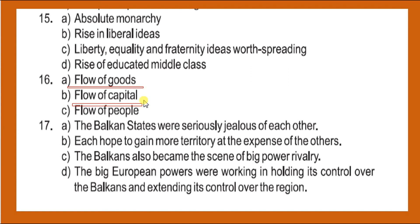The flow of people refers to movements such as the Sanyasi movement and the system of indentured labor. When industrialization was at its peak, the British took people from lower castes — especially from India and other African countries — and made them work as indentured laborers in their colonies. This increased the flow of people. So people, capital, and goods started moving mainly because of industrialization.